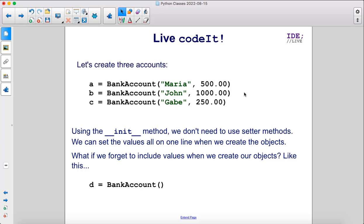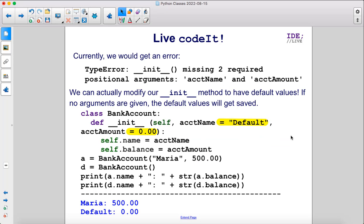What if we forget to include values when we create our objects, like this? Currently we would get an error. We can actually modify our __init__ method to have default values. If no arguments are given, the default values will get saved.